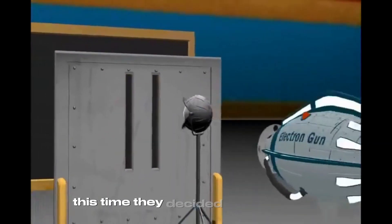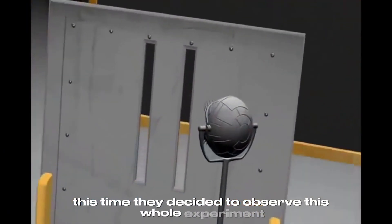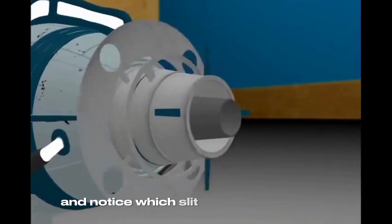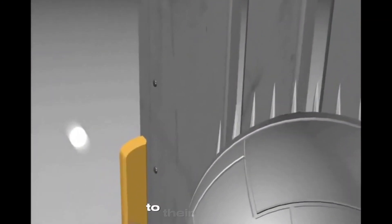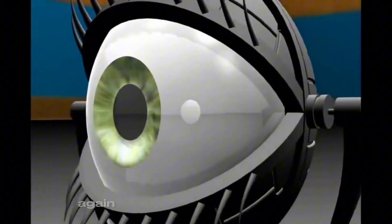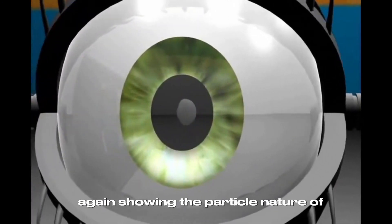This time, they decided to observe this whole experiment and notice which slit does the electron go through, and when does it change its nature from particle to wave. To their surprise, the result of the experiment totally altered. They found two fringes of light on the screen again, showing the particle nature of electron.